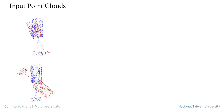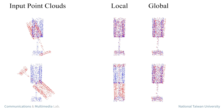Existing methods either rely on matching local geometric features or leveraging global shapes. The former are sensitive to pose differences, and the latter are inconsistent when facing distribution variances such as partial overlapping.